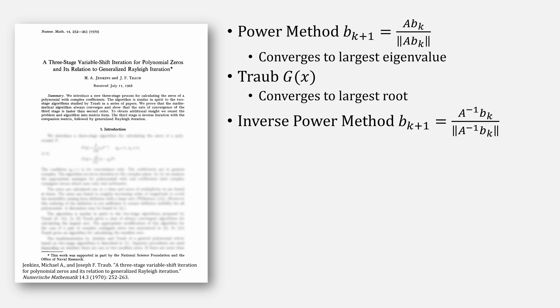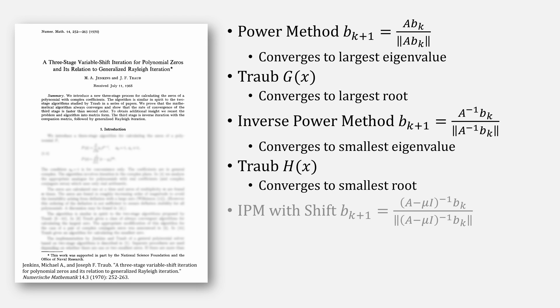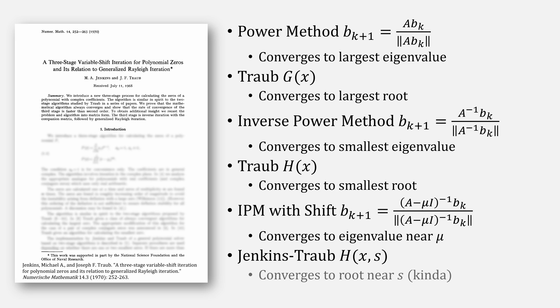One bit of symmetry which you may have noticed is that power method always converges to our largest eigenvalue. Traub's g equation converges to our largest root. Inverse power method converges to our smallest eigenvalue, and Traub's h equation converges to our smallest root. The inverse power method with the shift converges to our closest guessed eigenvalue of mu, and our Jenkins-Traub h equation with the shift converges to the root nearest our shift. Well, kinda. For stability, Traub forces it to convert to our smallest root.